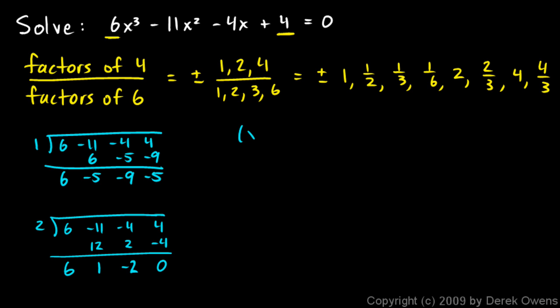This factors as x minus 2, and then 6x squared plus x minus 2 equals 0. And so we can immediately see here that x equals 2 is one of the solutions. And then we need to solve this: 6x squared plus x minus 2 equals 0. And I'll go straight to the quadratic formula here. A is equal to 6, B is equal to 1, C is equal to negative 2.